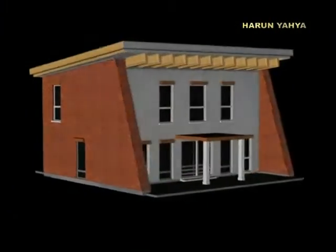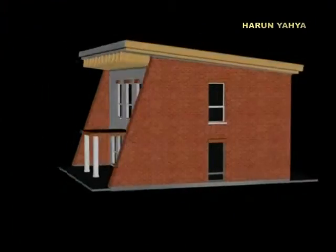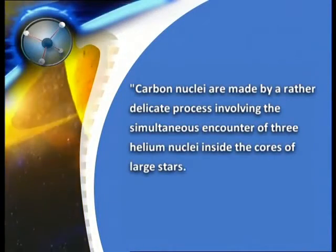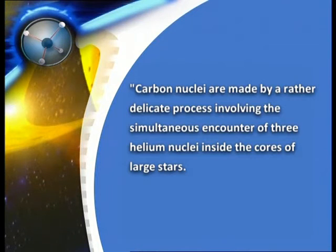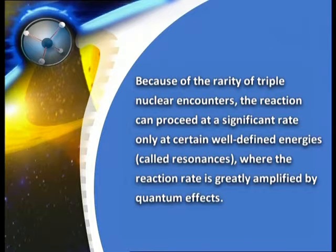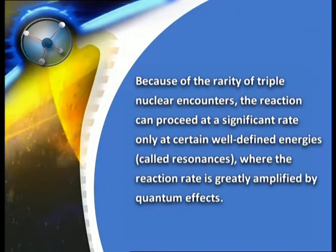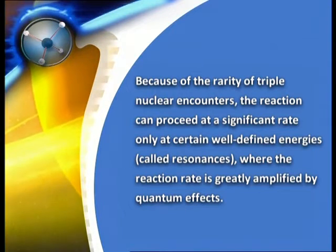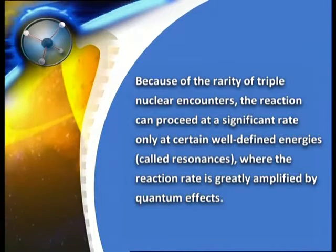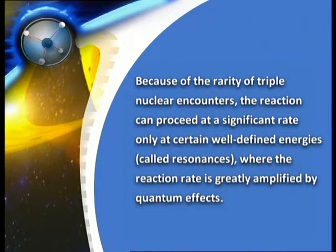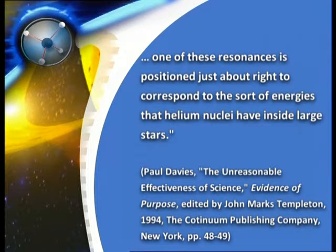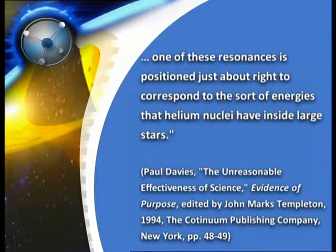The famous scientist Paul Davies describes this miraculous phenomenon: 'Carbon nuclei are made by a rather delicate process involving the simultaneous encounter of three helium nuclei inside the cores of large stars. Because of the rarity of triple nuclear encounters, the reaction can proceed at a significant rate only at certain well-defined energies called resonances, where the reaction rate is greatly amplified by quantum effects. One of these resonances is positioned just right to correspond to the sort of energies that helium nuclei have inside large stars.'